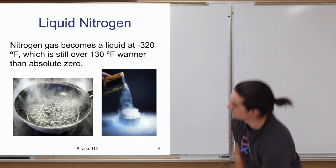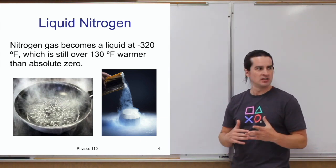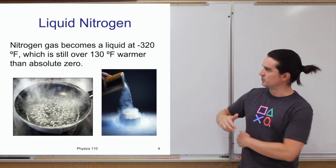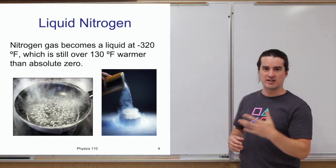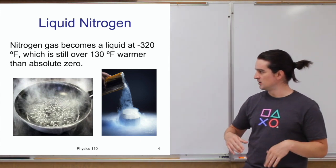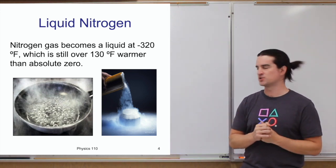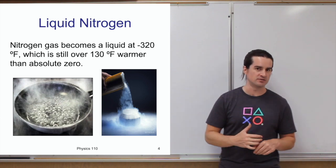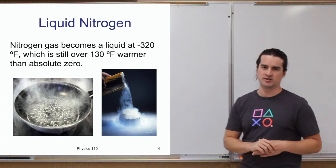For example, nitrogen gas becomes a liquid at -320°F — that's why liquid nitrogen is used for cryogenic cooling. But even though that's extremely cold, it's still 130°F warmer than absolute zero, warmer than 0 K. So things we think of as really cold still have a lot of atomic motion going on.